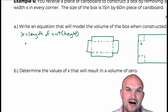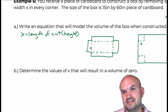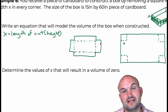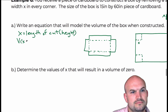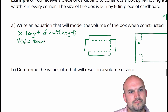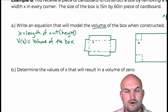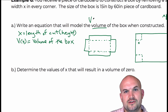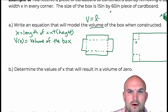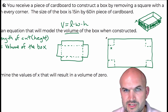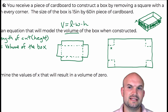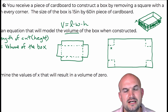They're asking us to write an equation to represent the volume. The volume is going to be a function of x — the size of that cut — because a really small cut or a really big cut gives you a different shaped box and therefore a different volume. So let V(x) equal the volume of the box. Volume of a rectangular prism is length times width times height.